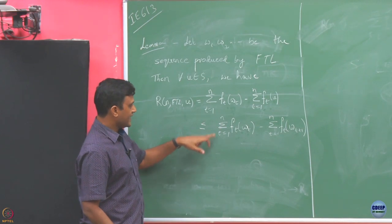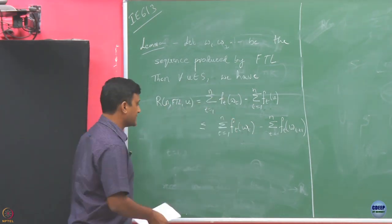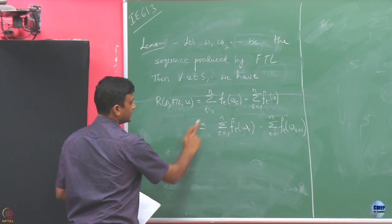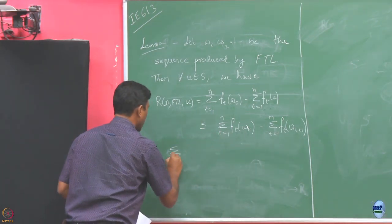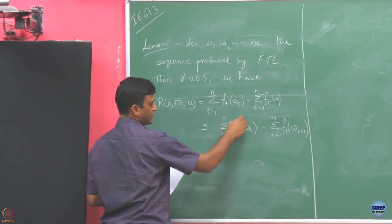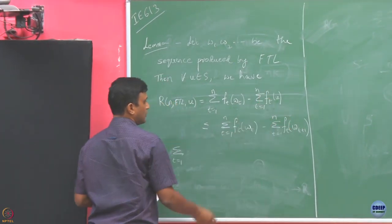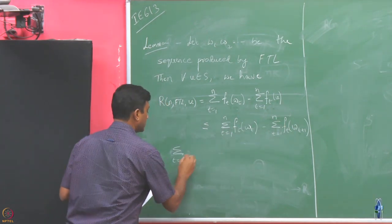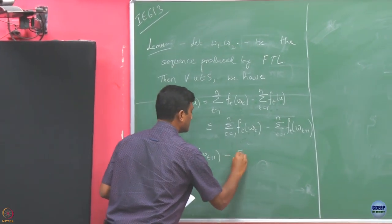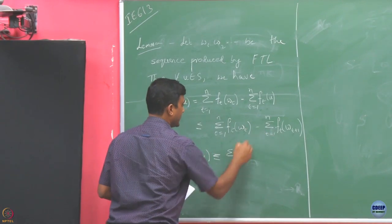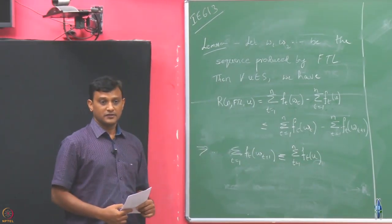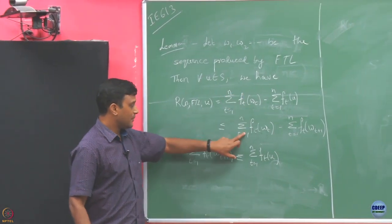Showing this is the same as showing — since the first term is the same in both — that T equals to some expression. If I just knock off this term because the first term is the same, I want to show that this is an upper bound. So I am just rearranging these two things.